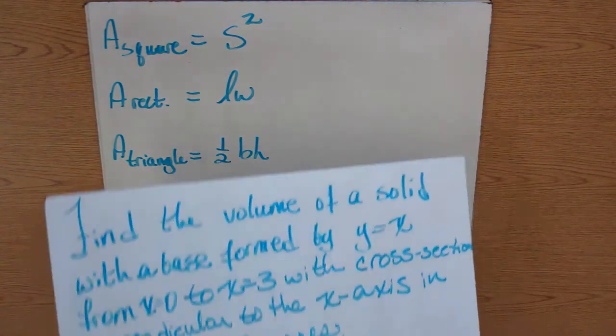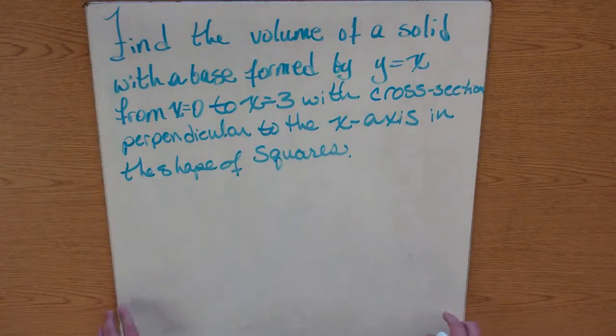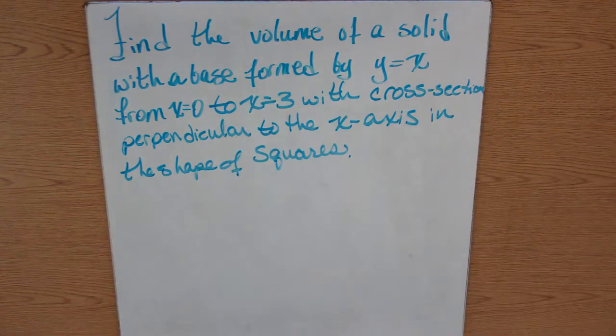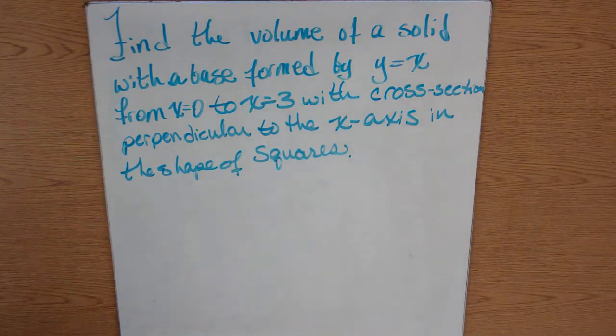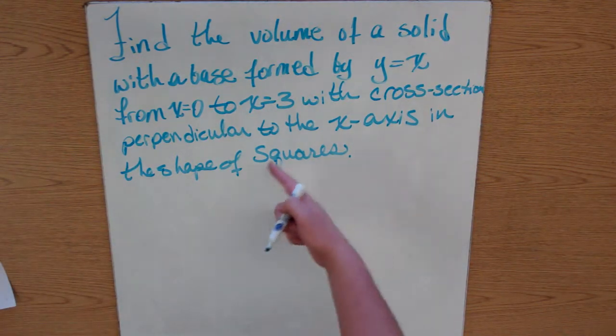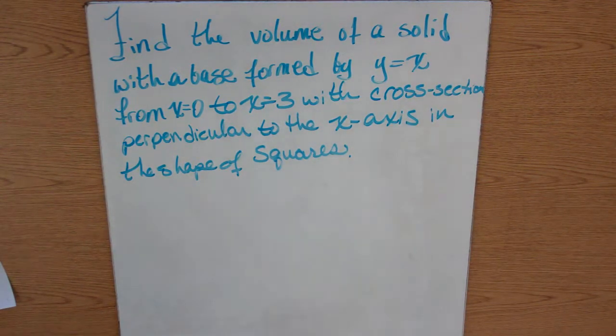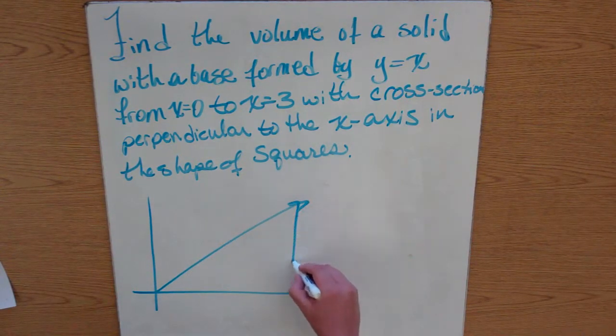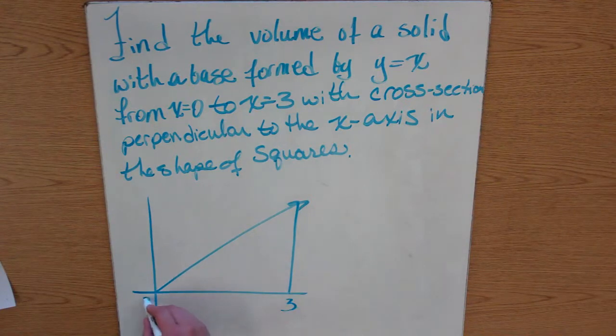Let's look at an example. Find the volume of a solid with a base formed by y equals x from 0 to 3 with cross sections perpendicular to the x-axis in the shape of squares. Now you might be asking me, what does that mean, cross sections perpendicular to the x-axis? Well, this is what it means. Let me go ahead and draw it. Y equals x, 3, 0.